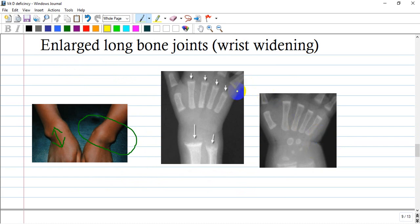Enlarged bone joints or wrist widening. Look at this distance - you can see even clinically these bones are enlarged in the epiphysis, and even this distance is enlarged.